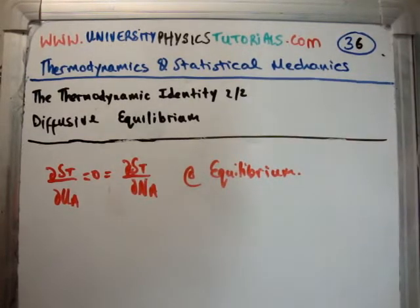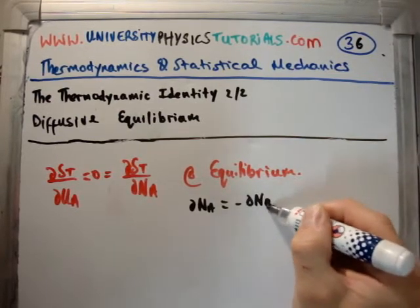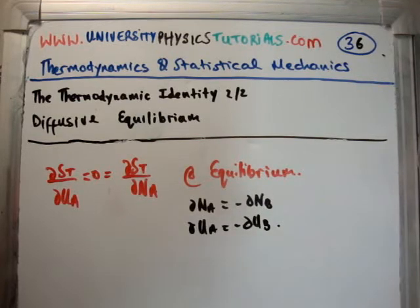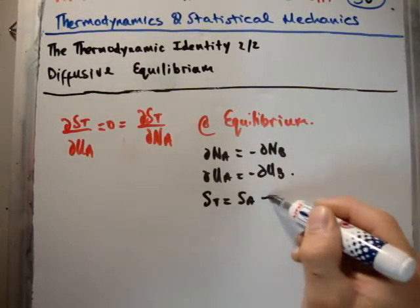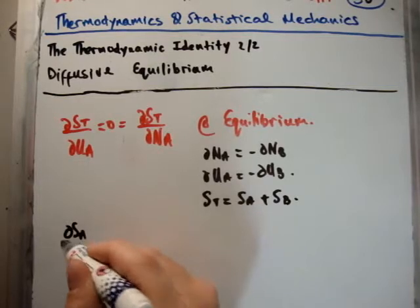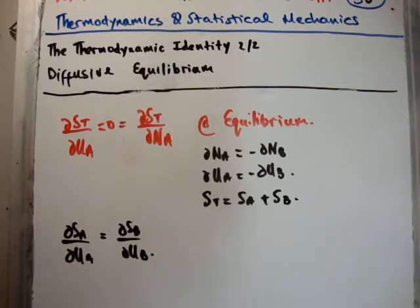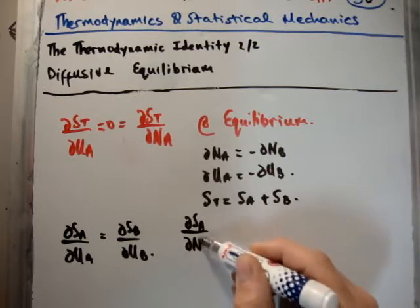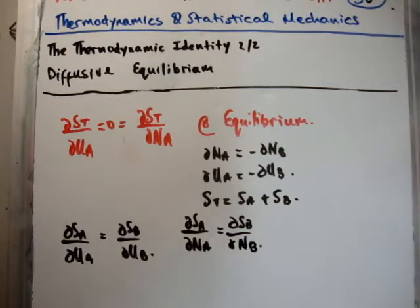So that should make sense at this stage. The usual tricks here: we know that del N sub A is equal to minus del N sub B, and del U sub A is equal to minus del U sub B. We can plug all things in as normal. And del S total is equal to S sub A plus S sub B — that's a pretty important identity. So we're going to get del S sub A over del U sub A equals del S sub B over del U sub B at equilibrium. Similarly, we're going to get del S sub A over del N sub A equals del S sub B over del N sub B at equilibrium. These are our equilibrium conditions.